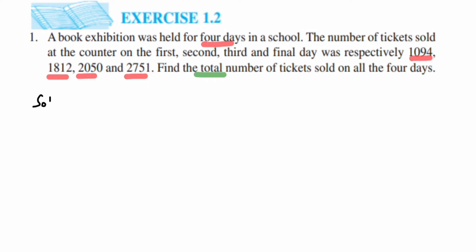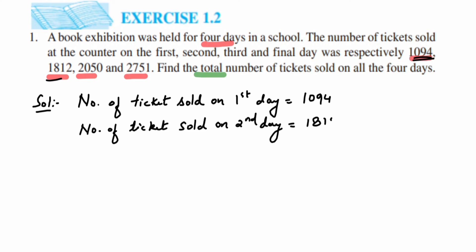So here is the solution. First, it will be number of tickets sold on first day, so 1094. Same thing again for second day: number of tickets sold on second day, so on second day it was 1812.